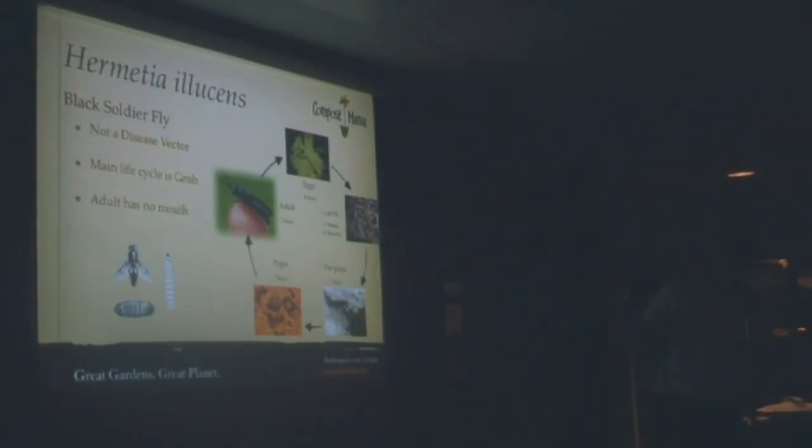When you go from grub to pupa, that's about a total of 14-day process. In that process, the larva actually loses its mouth part. It secretes its entire digestive system. Then what it wants to do is it wants to leave the pile of waste that it was so happily eating away in.